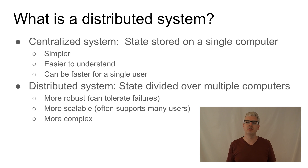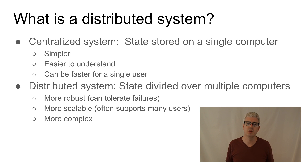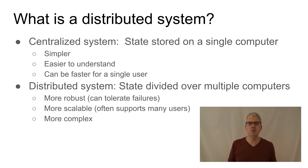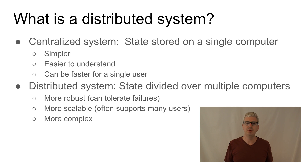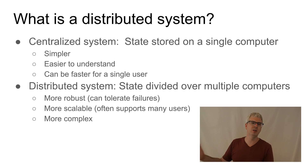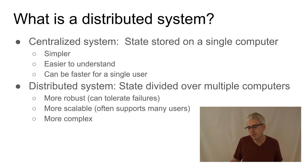With a distributed system, the state of your program and the program itself is divided over more than one computer. Back to the Word example: if instead of saving on your local disk, you stored your document in Dropbox, then if your computer fails, you can just borrow your friend's computer, load the document from Dropbox, and keep on working. Your system is fault tolerant because your state is divided over more than one computer. If one of Dropbox's computers fails, it probably has your document replicated over more than one computer there as well.